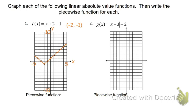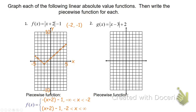Absolute values can also be thought of as piecewise linear functions — one equation with a negative slope up to the turning point, and then to the right a new equation with a positive slope. So we can write it as piecewise with two parts. To the left, it has a negative 1 slope; a key point is negative 2, negative 1, so: f of x equals negative quantity x plus 2, minus 1, on the interval from negative infinity to negative 2. To the right, the slope is positive 1, so it's the quantity x plus 2, minus 1, from negative 2 to infinity.